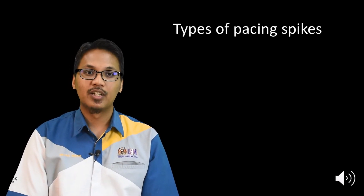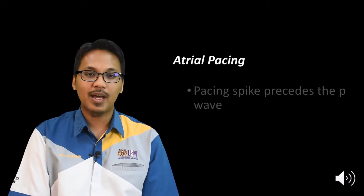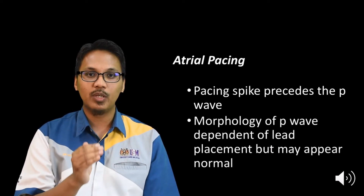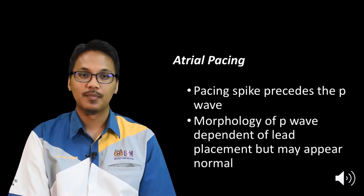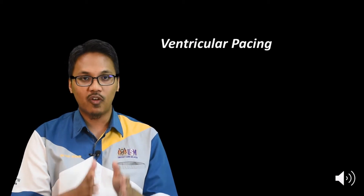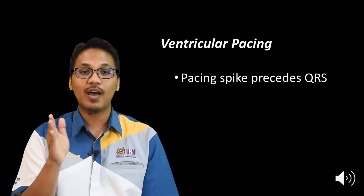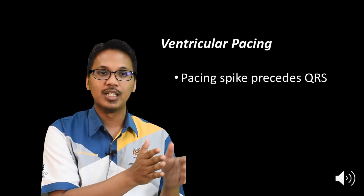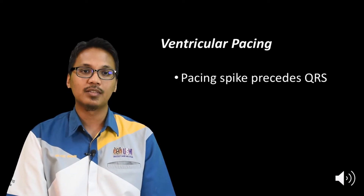There are a few types of pacing spikes depending on the area where the pacing originated. The first type is atrial pacing — a pacing spike that precedes the P wave. The morphology of the P wave depends on lead placement but may appear normal. The second type is ventricular pacing spikes, where the pacing spike will precede the QRS complex.